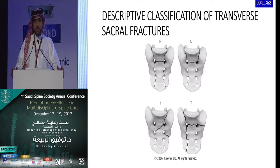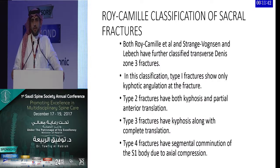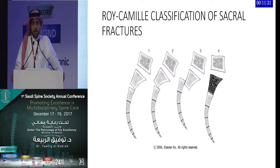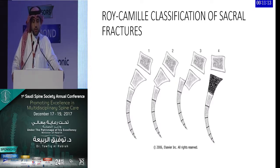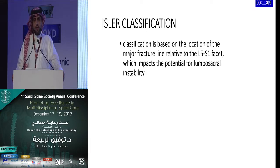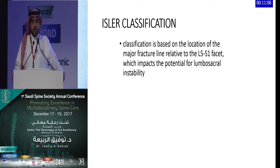These complex fracture types each carry different degrees of instability and require different treatment modalities. Another classification addresses sagittal instability of the sacrum, directed toward sagittal spinal stability, with four types: Type 1 is a simple flexion injury, Type 2 involves flexion with minor displacement, Type 3 involves complete displacement, and Type 4 involves comminution of the S1 body — each dictating the type of fixation or treatment that can be used.